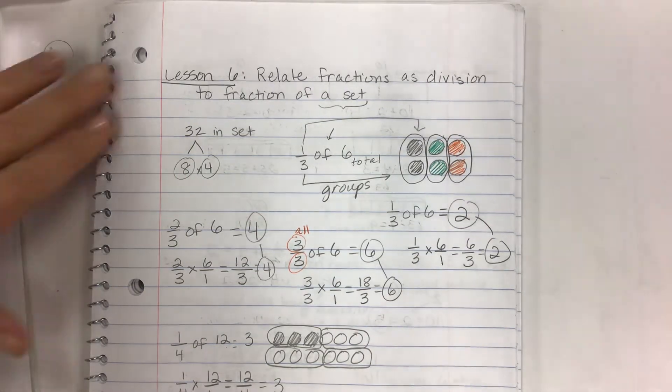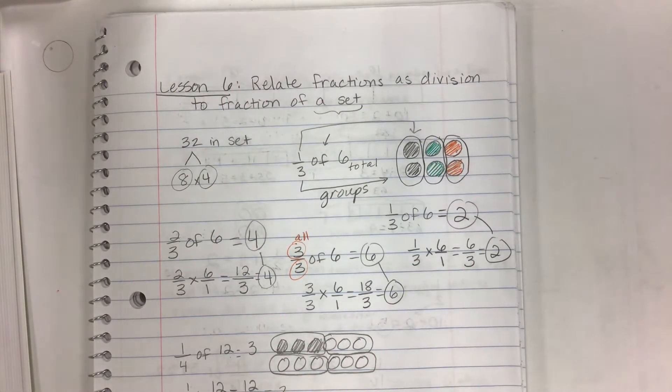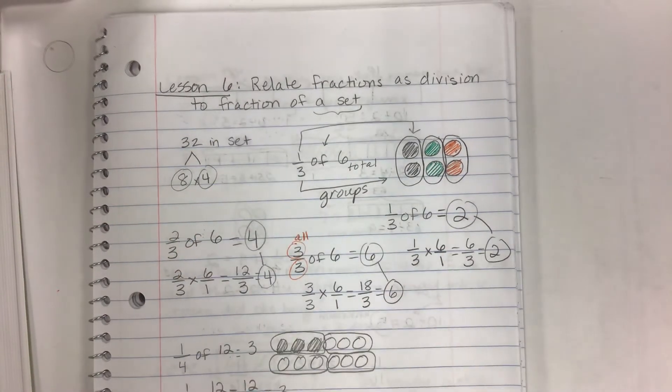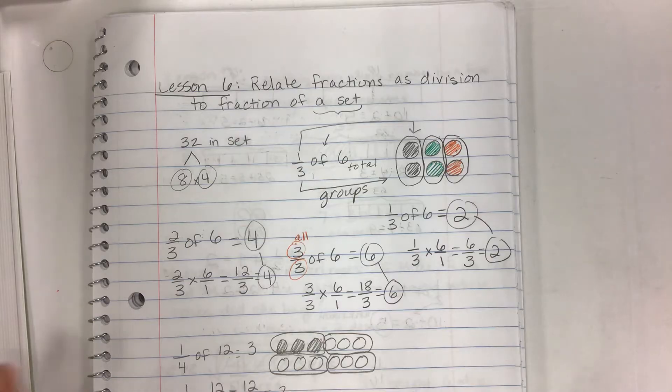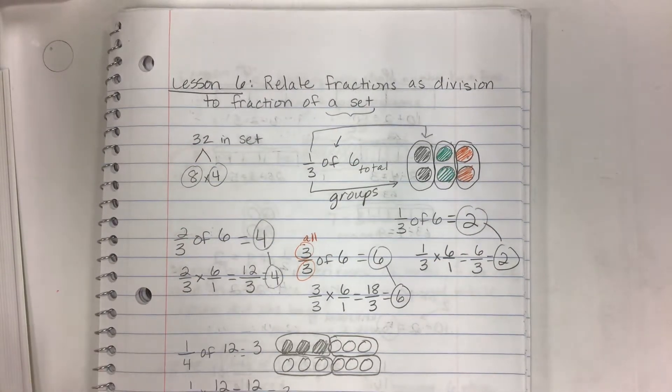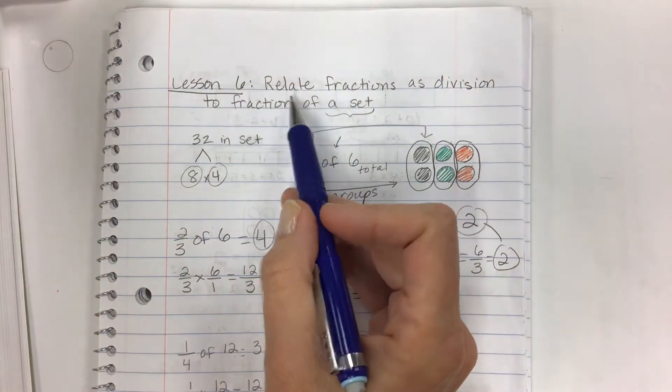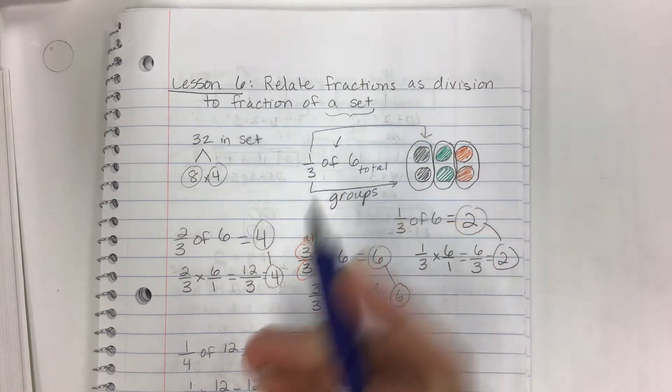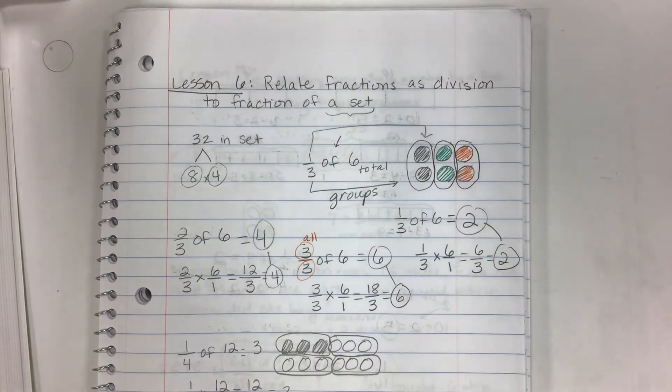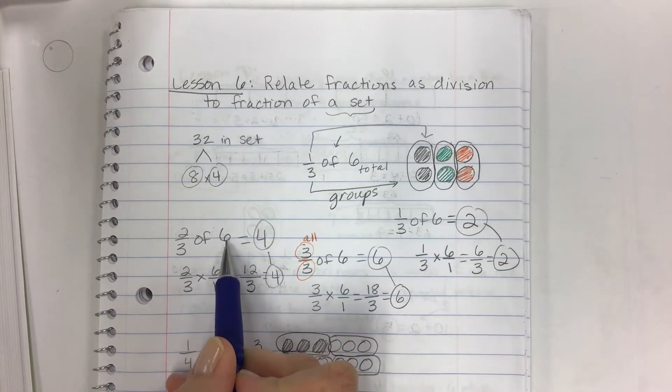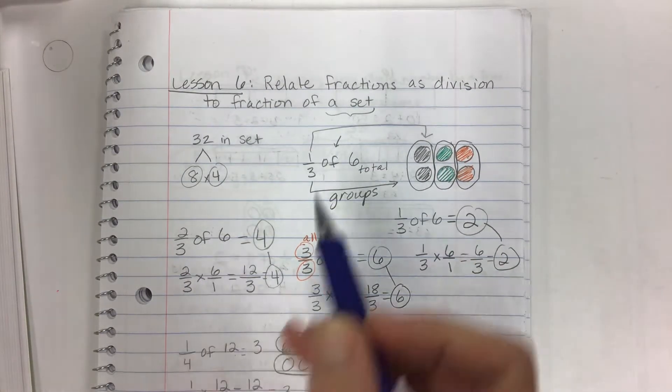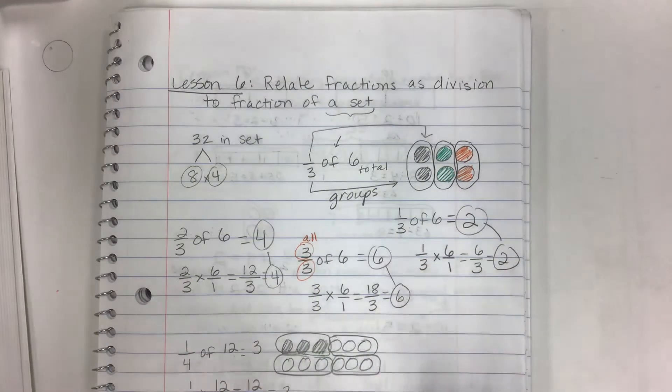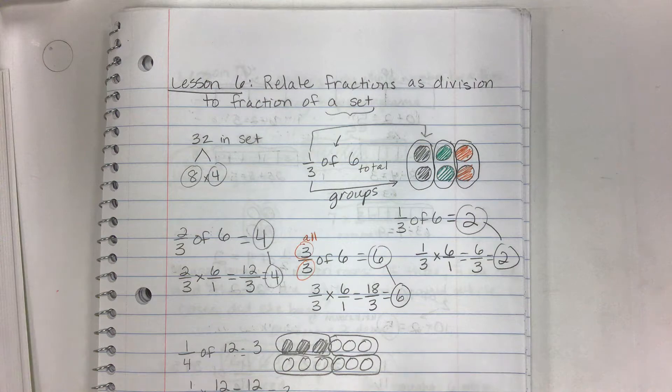Hey kids! Today is like the coolest lesson ever. It's lesson six in module four and it is totally fun and really easy, very concrete, easy to see. So the objective is to relate fractions as division to fraction of a set. And so this is just finding a fraction of a number. And key word, of means multiply when you see of in a word problem. It usually means to multiply.